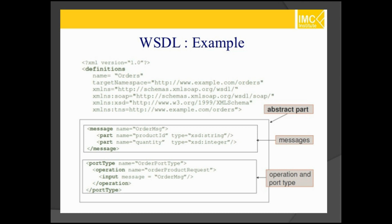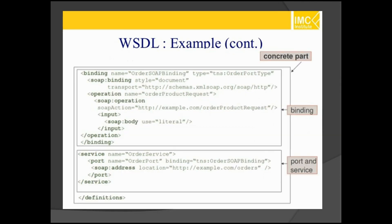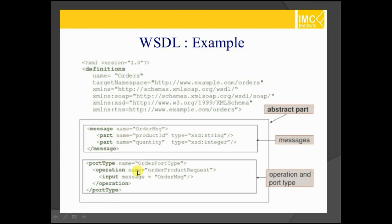The operation specifies whether it is one-way or two-way communication, and you have to use input as a message for the order message. Now the concrete part: you have to specify binding, port, and services. Binding refers to calling different services, and here the binding will have a SOAP binding with an operation. You can specify either one-way or two-way communication. You have to specify here for binding — whatever order port type you typed — that same order port type should be referred to in the port type.